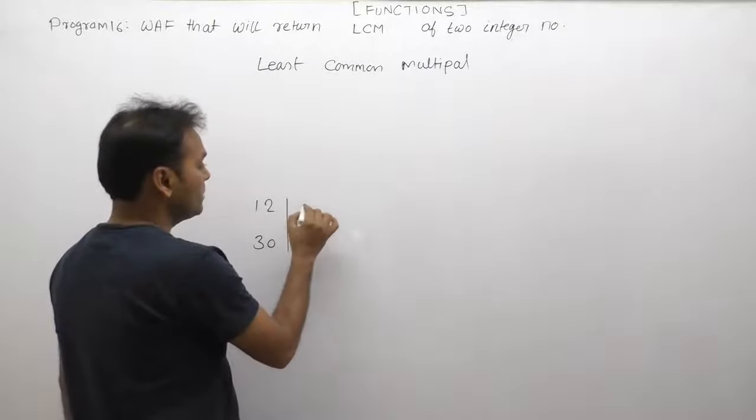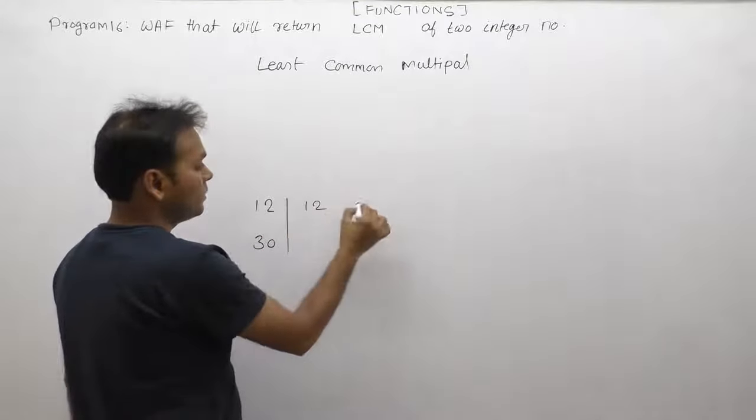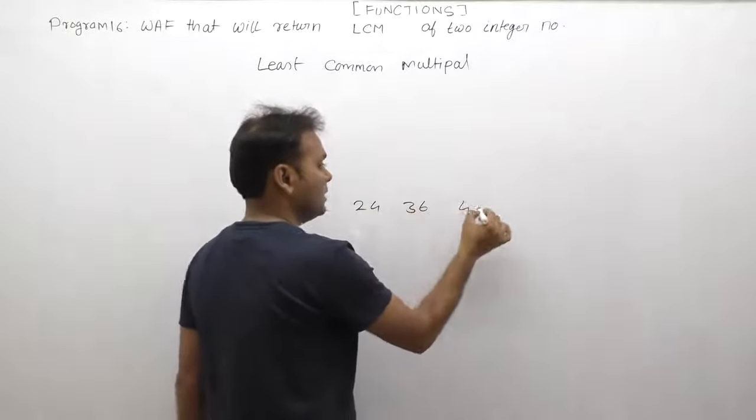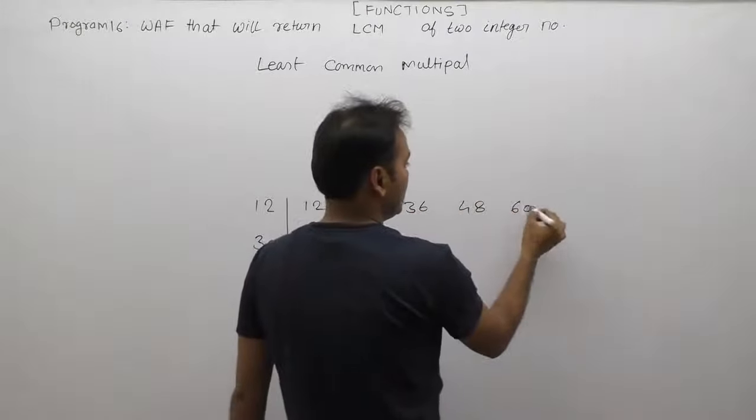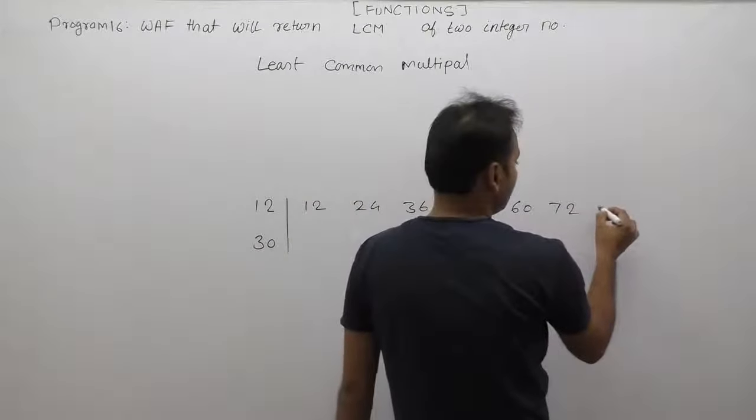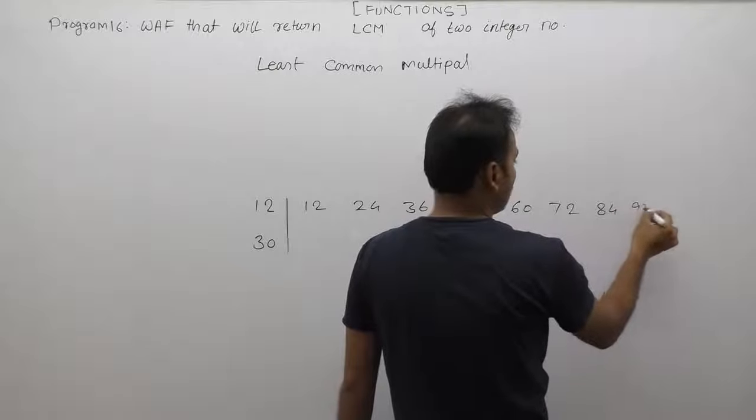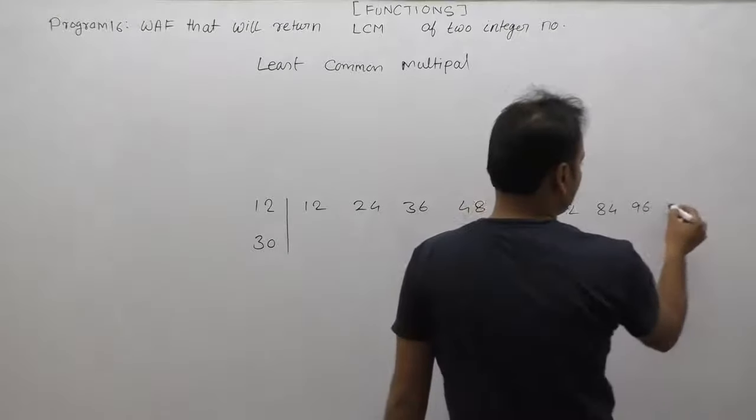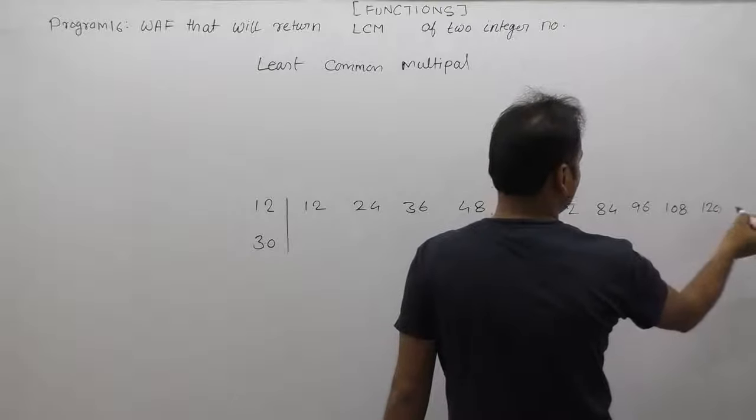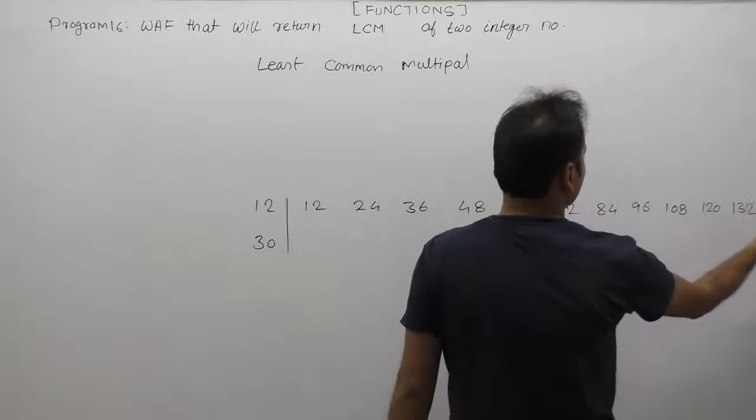Possible multiples of 12 are: 12 itself, 24, 36, 48, 60, 72, 84, 96, 108, 120, 132, and so on.